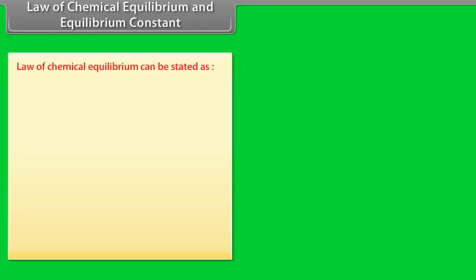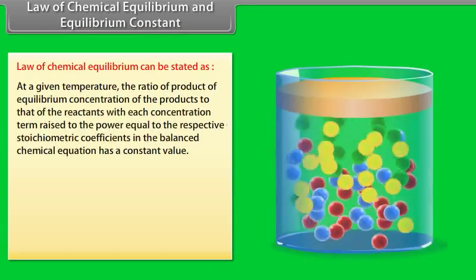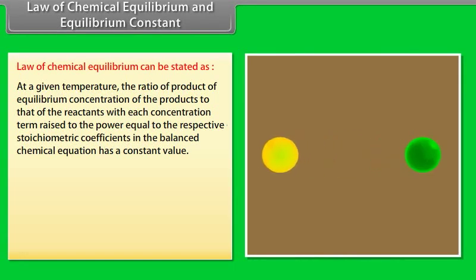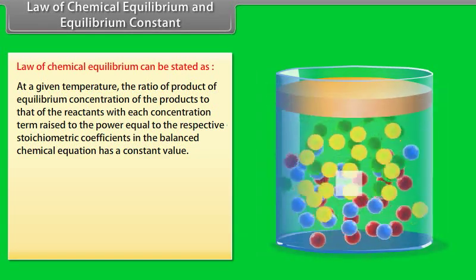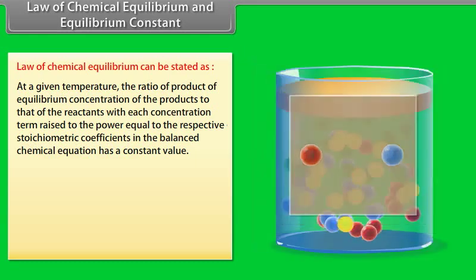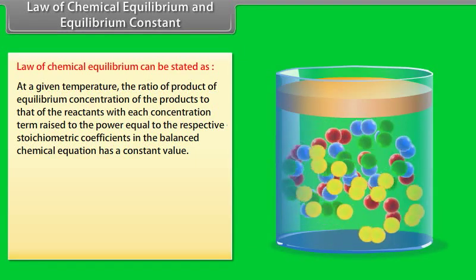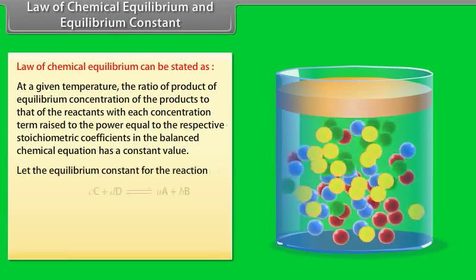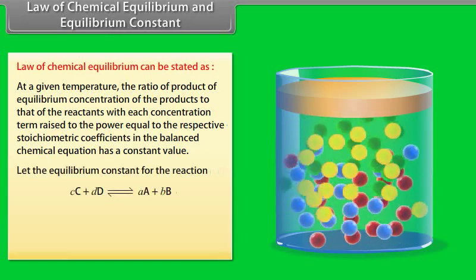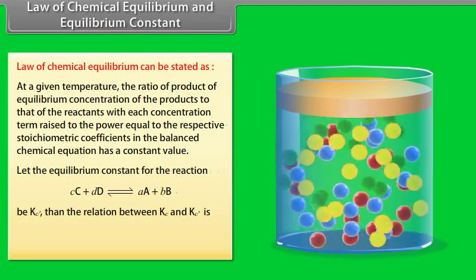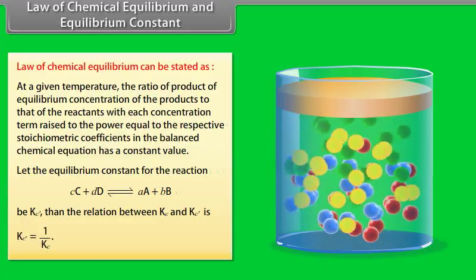The law of chemical equilibrium states that at a given temperature, the ratio of the product of equilibrium concentrations of products to that of reactants, with each concentration term raised to the power of its stoichiometric coefficient in the balanced equation, has a constant value. If the equilibrium constant for the reverse reaction is KC', then KC' = 1/KC.